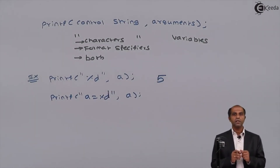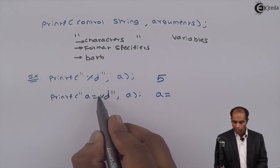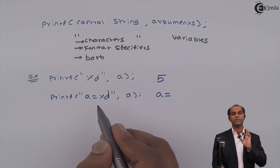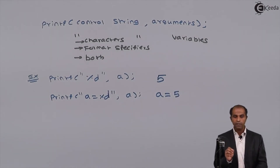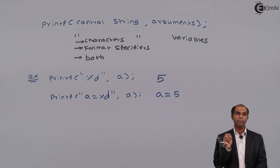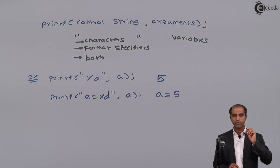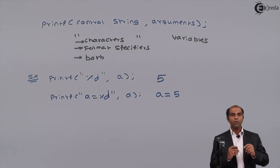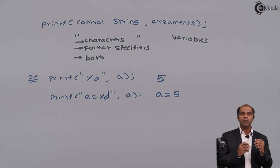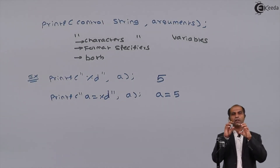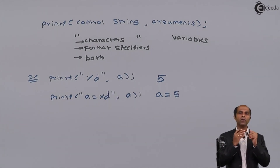The advantage of displaying with a message is that first it displays 'a', then 'equals to', then the value at the format specifier %d. So now it says 'a equals to 5', which is more informative. Printf displays the contents of a on the output screen with a meaningful message. So you can display 'area of circle' with just a value, or 'area of circle equals to' some value. Always make the output more interactive by adding these messages.